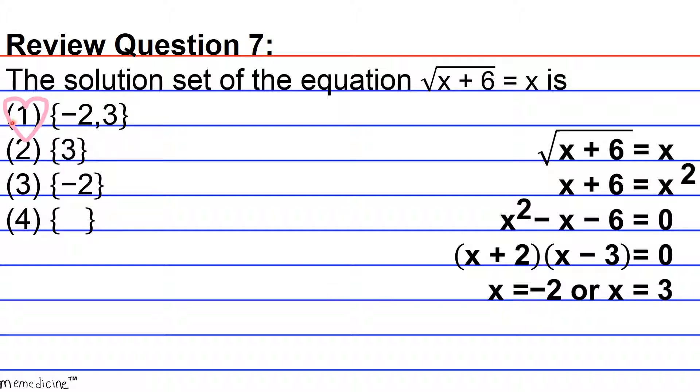Thus the correct answer choice is going to be answer choice 1. The set such that x is equivalent to negative 2 and x is equivalent to 3. So this bracket here is read the set of x such that x. Usually you have an x and a vertical bar written but that's not necessary here.